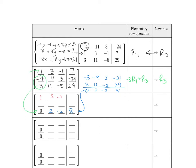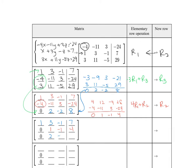Then we want another 0 in that first column. To make negative 4 go away, we need positive 4, so we multiply positive 4 times the first row and add that to row 2 to make the new row 2. So 4 times row 1 is 4, 12, negative 4, and 28. Adding that to row 2, we get 0, 1, negative 1, 4. So row 2 is 0, 1, negative 1, 4. The other rows stay the same: 1, 3, negative 1, 7, and 0, 2, negative 2, 8.